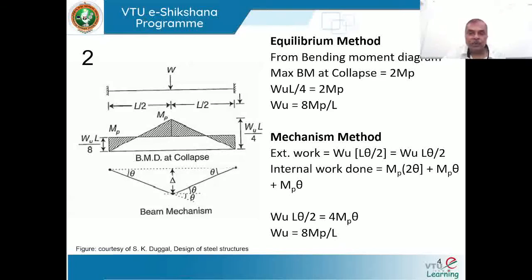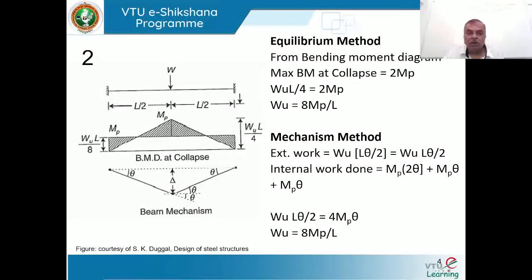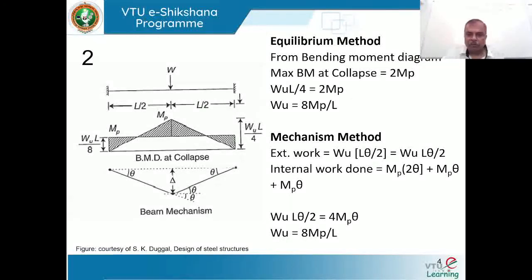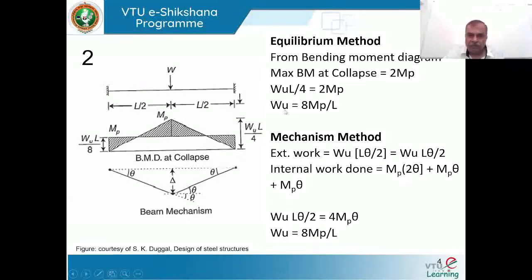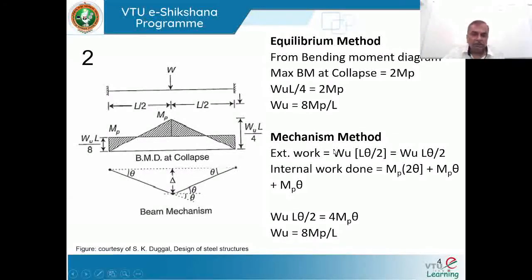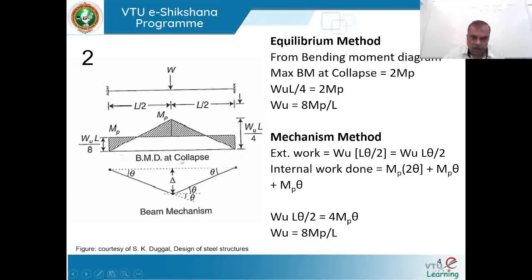In examinations, problems on continuous beams may involve analysis or determining how different methods apply — either the equilibrium method or the mechanism method. To obtain W = 8mp/L using the kinematic (mechanism) method, we need the mechanism diagram. In the static (equilibrium) method, the bending moment diagram is used.